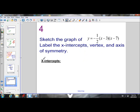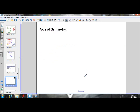One last example and then we'll be done with this one. Sketch the graph of y equals negative 1 over 2 times x minus 3 times x minus 7. We want to be able to sketch that graph. We first need the x-intercepts which we can tell by looking are 3 and 7.